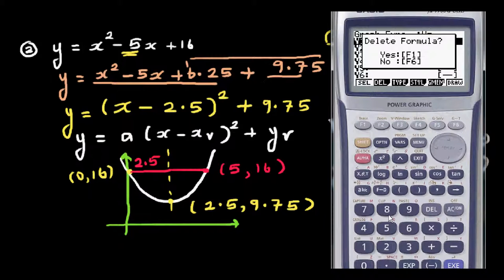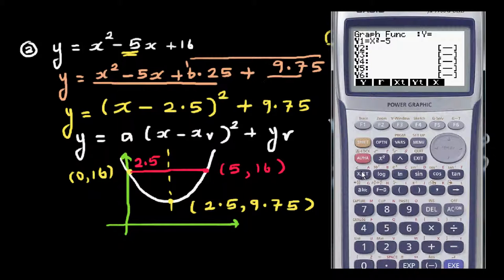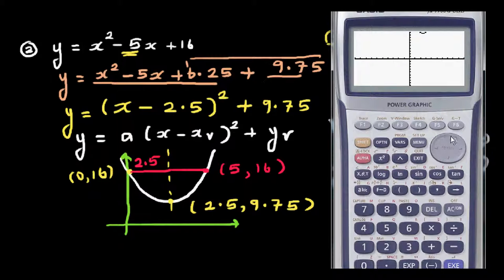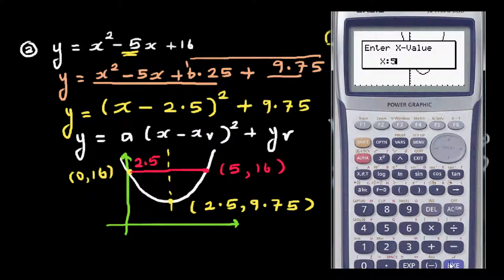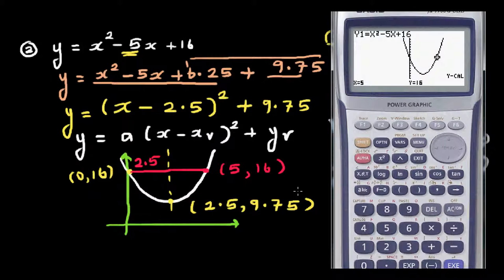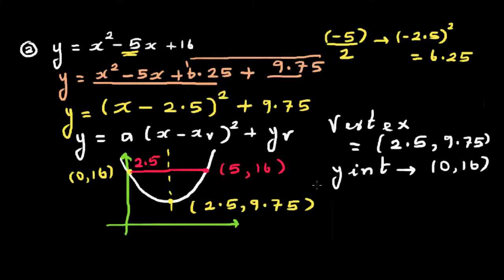Let's confirm on the graphing calculator. Go to graph and type x squared minus 5x plus 16. You can see the parabola. Go to j-solve — the minimum is 2.5 comma 9.75. The y-intercept is 0 comma 16. Using y-calc, when x is 5, y is 16. So this is confirmed. Hopefully these videos are helpful.